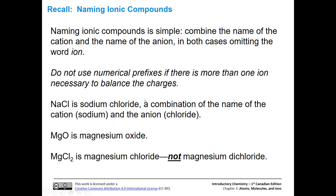When we name ionic compounds, it's actually really simple. First we name the cation, then we name the anion, and then we put the two of them together and leave off the word ion for each one. We don't need numerical prefixes if there's more than one ion necessary to balance the charges — we know those charges have to balance, so we don't need to tell people how many of each ion there is. For instance, sodium chloride is simply sodium chloride. Magnesium oxide: one magnesium two plus cation, one oxygen two minus anion — put those together and we get magnesium oxide.